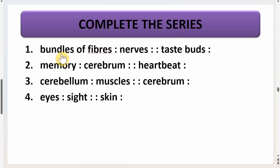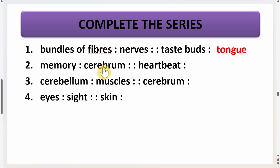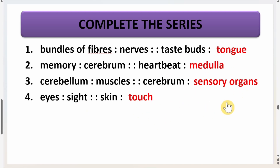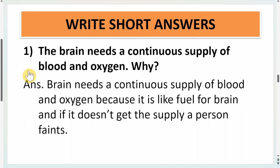Next question: complete the series. Bundles of fibers → nerves → taste buds → tongue. Memory → cerebrum. Heartbeat → medulla. Cerebrum → muscles. Cerebrum → sensory organs. Eyes → sight. Skin → touch. These are the answers to complete the series.